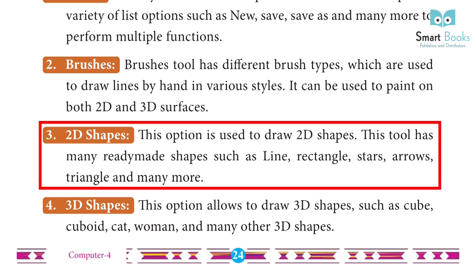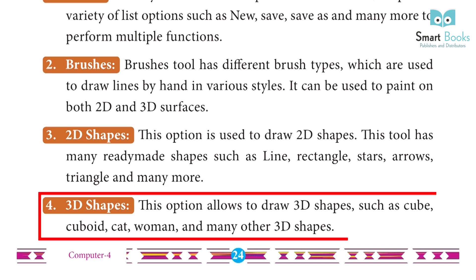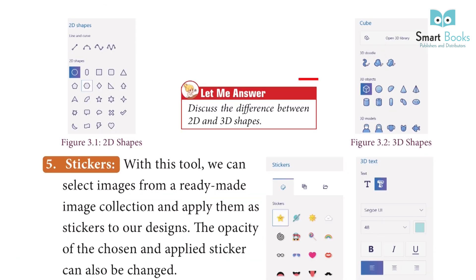3. 2D Shapes: This option is used to draw 2D shapes. This tool has many pre-made shapes such as lines, rectangles, stars, arrows, triangles and many more. 4. 3D Shapes: This option allows you to draw 3D shapes such as cube, cuboid, and many other 3D shapes. Let me answer: Discuss the difference between 2D and 3D shapes.